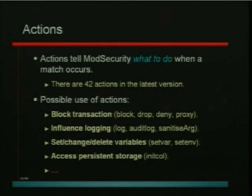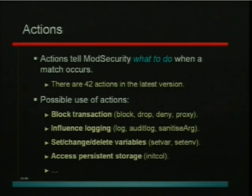Finally, actions are an equally powerful aspect of ModSecurity. We have 42 actions. We can block in different ways. We can influence logging, choosing to log or not log certain arguments. ModSecurity has internal parameters which you can set, increment, or decrement. There's also support for anomaly scoring — you can tell ModSecurity to gradually reduce the value of a variable over time. We also have persistent storage, meaning you can track an IP address and keep information on it in a database, such as a counter that increments every time something suspicious happens from that IP.